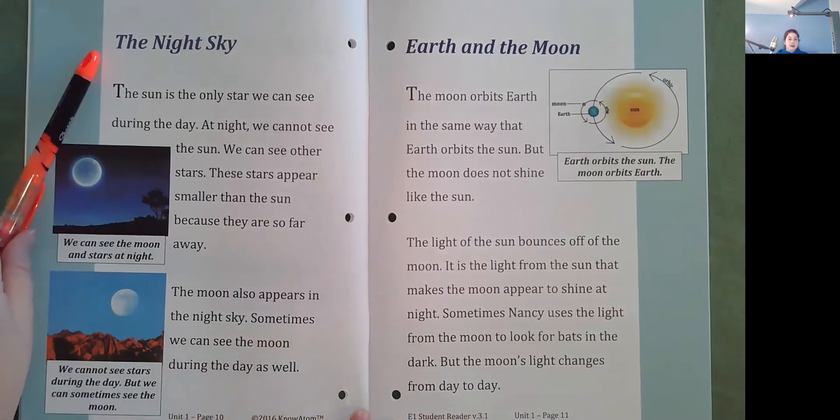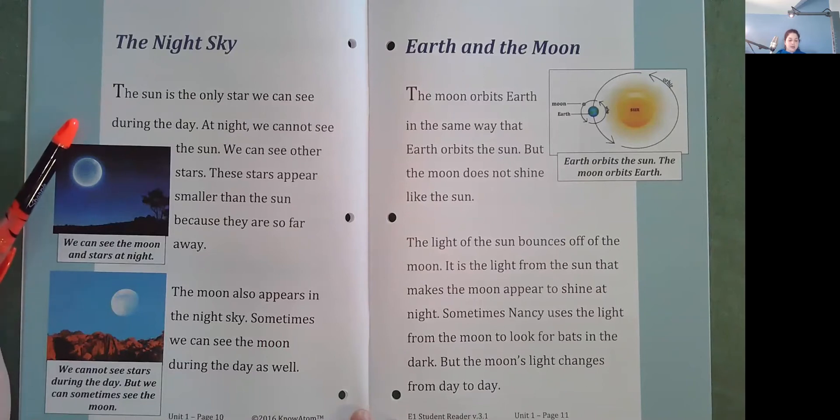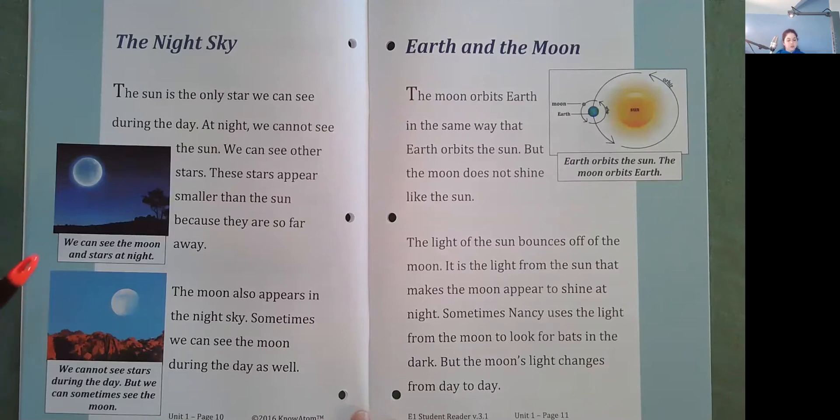The night sky. The sun is the only star we can see during the day. At night, we cannot see the sun. We can see other stars. These stars appear smaller than the sun because they are so far away. The moon also appears in the night sky. Sometimes we can see the moon during the day as well. So here's the moon at night. And here we cannot see stars during the day, but sometimes we can still see the moon.